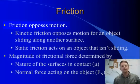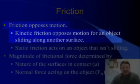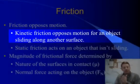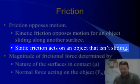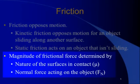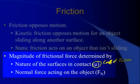So let's get started. First off, friction is a force. It opposes motion. Kinetic friction opposes motion for an object that slides along another surface. Static friction acts on an object that isn't sliding. Now the magnitude of the frictional force is determined by two things: the nature of the surfaces in contact, and the normal force acting on an object, FN.